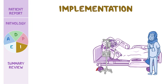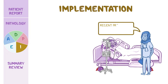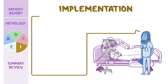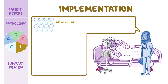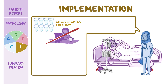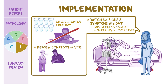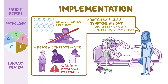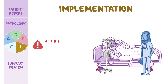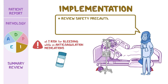Once Ms. Gutierrez is stable and comfortable, you explain how her recent pregnancy and cesarean section increased the risk of DVT. To help with prevention in the future, you remind her to drink 6–8 cups (1.5–2 liters) of water each day, to avoid sitting for long periods of time, and to watch for signs and symptoms of DVT such as pain, redness, warmth, or swelling in her lower legs. You also review symptoms of VTE — including shortness of breath, chest pain, and cough — and advise her to call for an ambulance immediately if she experiences any of these. Because she will be at increased risk for bleeding while on anticoagulation medications, you review safety precautions when using sharp objects and remind her to watch for bruising and signs of bleeding.